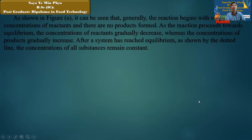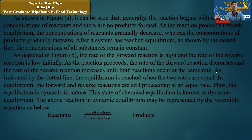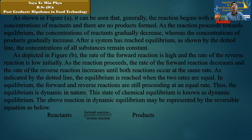As depicted in Figure B, initially the rate of the forward reaction is high and the rate of the reverse reaction is low. As the reaction proceeds, the rate of the forward reaction decreases and the rate of the reverse reaction increases, until both reactions are at the same rate — indicated by the dotted line — at which point equilibrium is reached. The reaction is dynamic in nature.